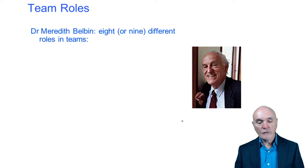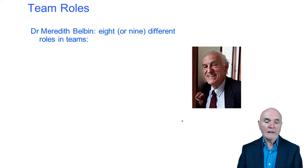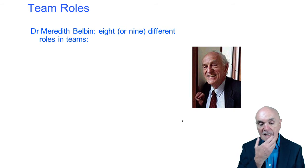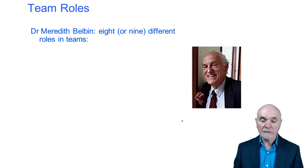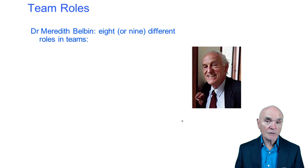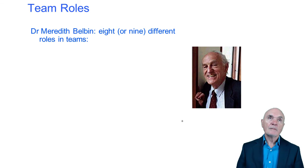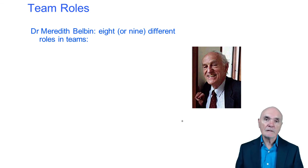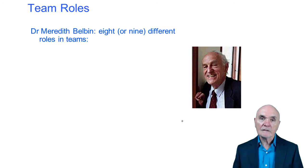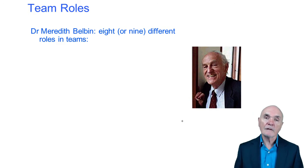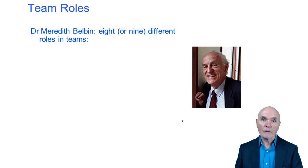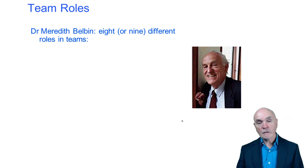A writer called Meredith Belbin identified eight or nine different roles within teams or groups. The great thing about a team — when you talk about a team, you tend to be talking about something which has been deliberately formed. But if you think of a football team, you know there's a range of skills in that — there's someone who's good at goalkeeping, someone who's good at scoring, someone who's good at defence and so on.